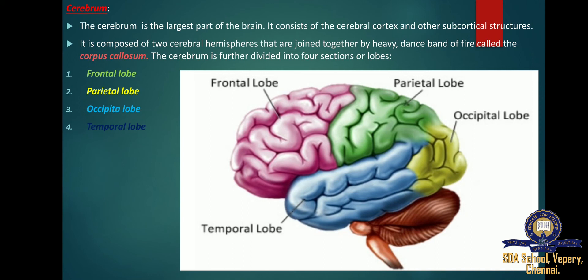The occipital lobe is located at the back of our brain and is associated with visual processing, such as visual recognition, visual attention, and visual perception of body language such as posture and expression.